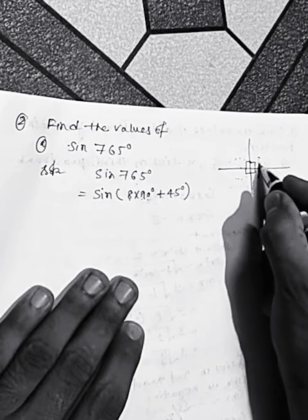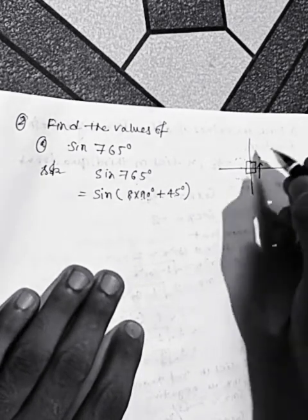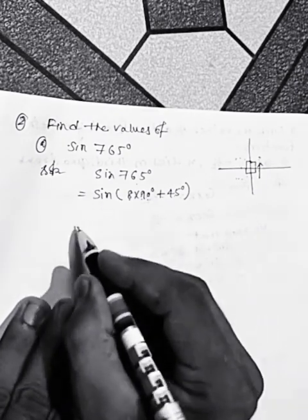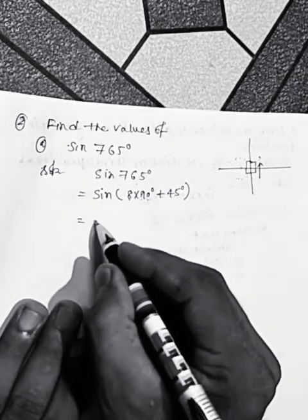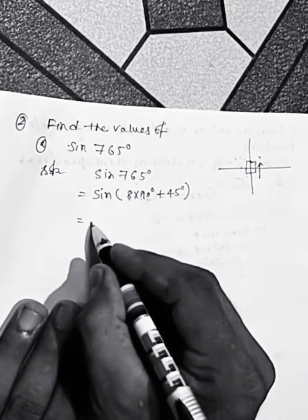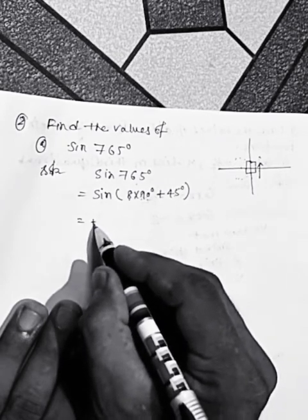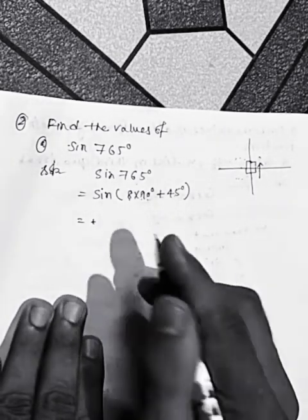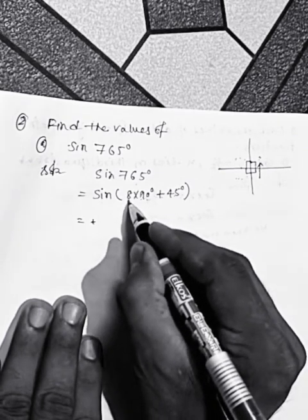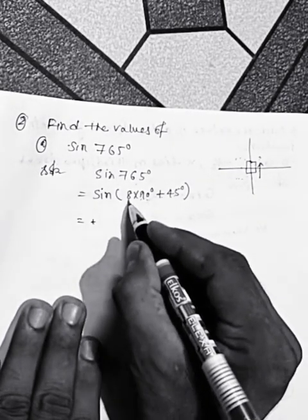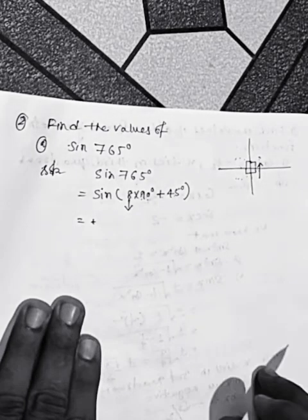Since it goes into the first quadrant, sine is positive in the first quadrant. So the sign is positive. Now, after determining the sign, we look at the coefficient of 90.